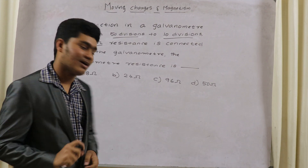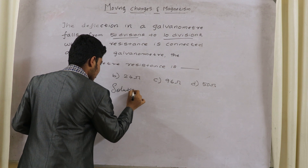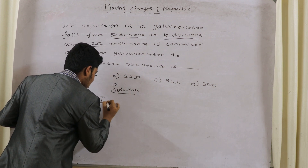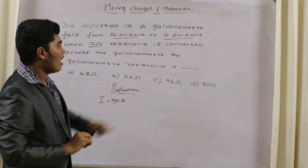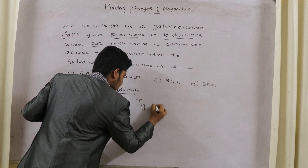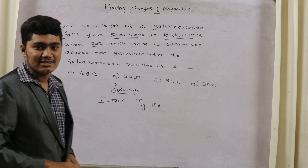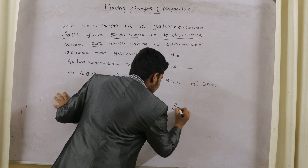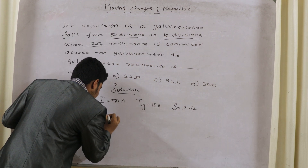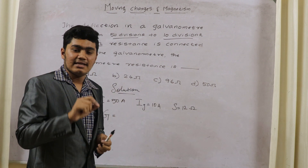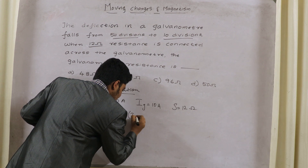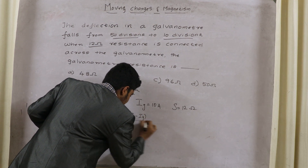Solution: 50 divisions is total current I equal to 50 ampere. 10 divisions is galvanometer current IG equal to 10 ampere. 12 ohms is the shunt resistance S equal to 12 ohms. Now, galvanometer resistance G is equal to the formula: S into (I minus IG) divided by IG — that is, shunt resistance into total current minus galvanometer current, divided by galvanometer current.